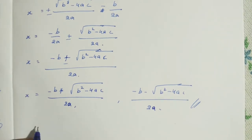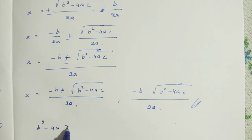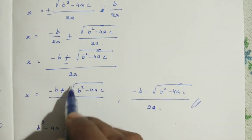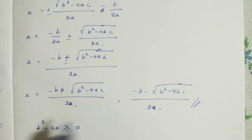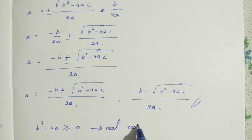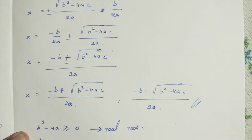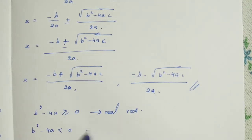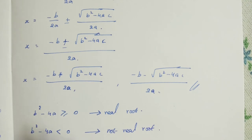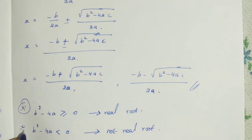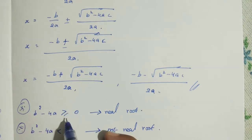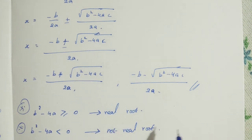One more important point: if B squared minus 4AC is greater than or equal to 0 — that is, more than 0 or equal to 0 — then we get real roots. But if B squared minus 4AC is less than 0 — that is a negative number — then it is not a real root; it is an imaginary root. So when B squared minus 4AC is positive or 0, it is a real root, and when it is negative, we call it an imaginary root.